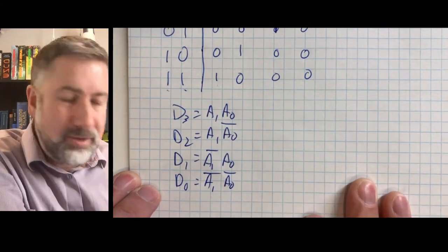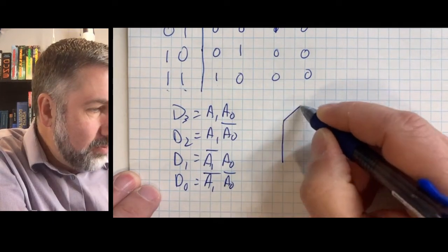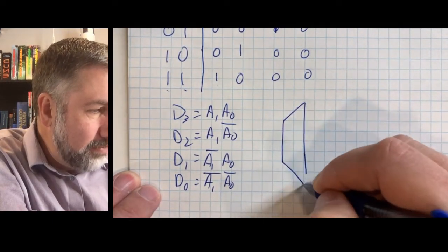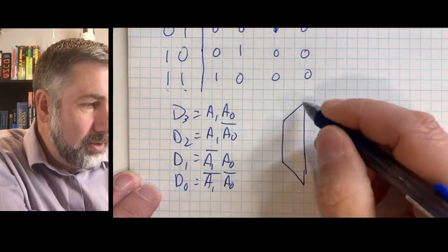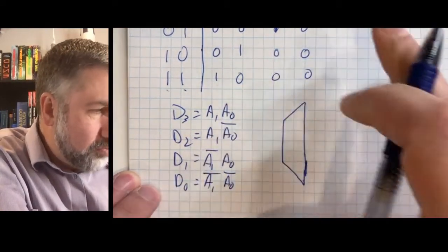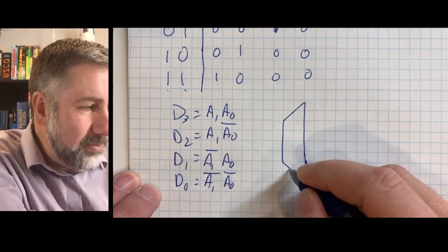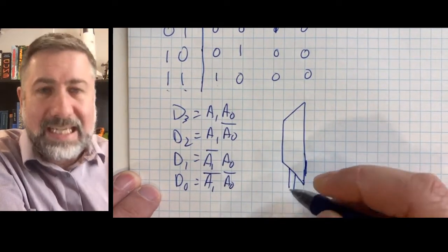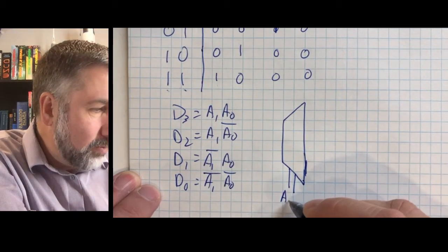And we're going to draw out this device. We're going to draw it with a slightly unusual shape — it's a box that spreads out a little bit. We're going to have our inputs placed at the bottom, which is a little unusual, but you'll see how this is going to work.